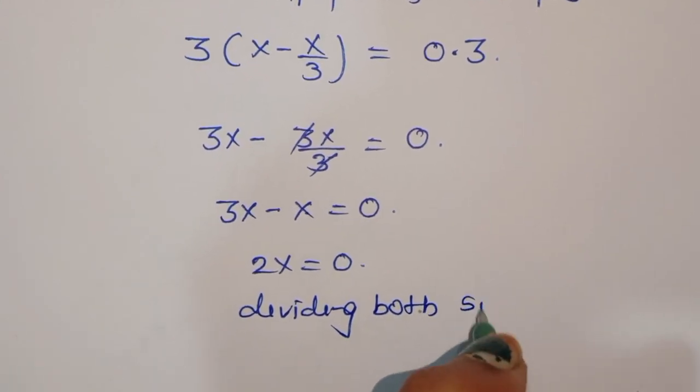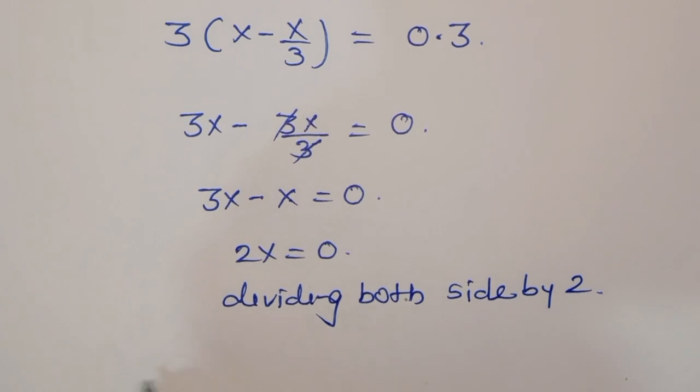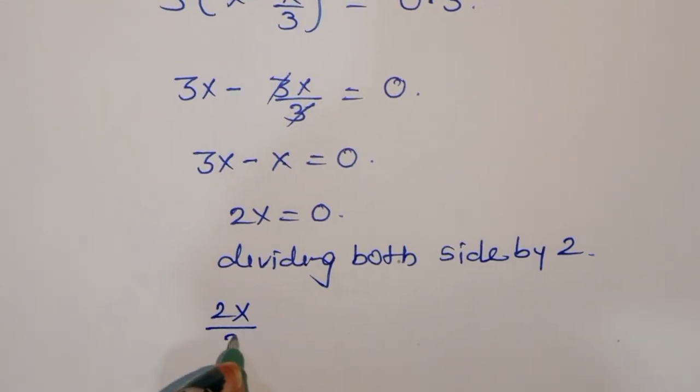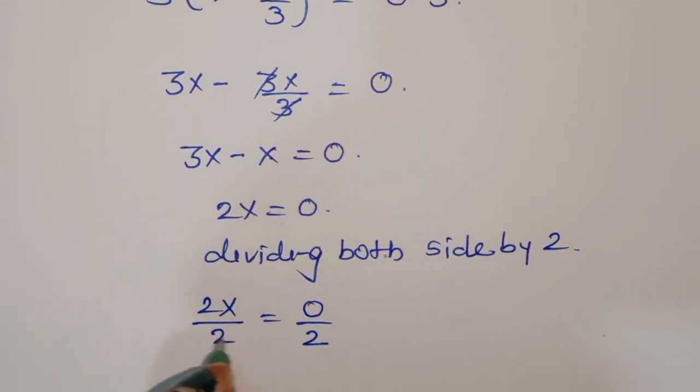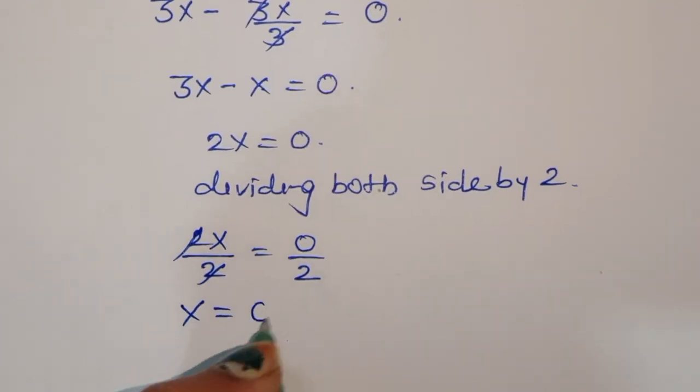We will get 2x divided by 2 is equal to 0 divided by 2. x is equal to 0.